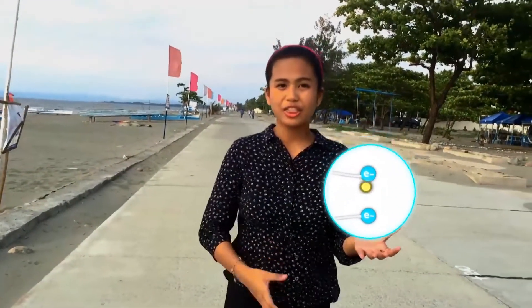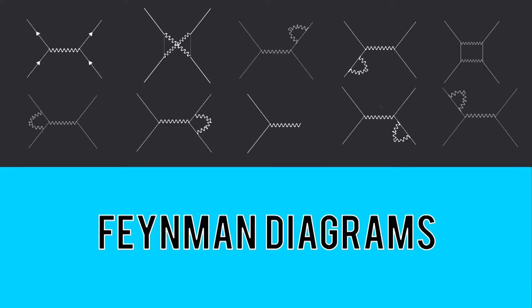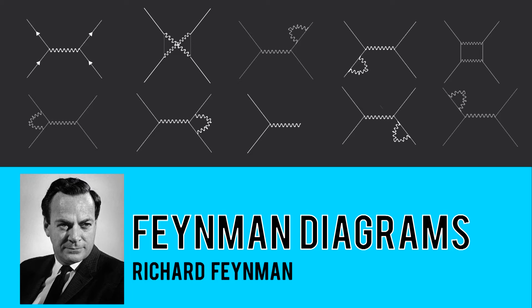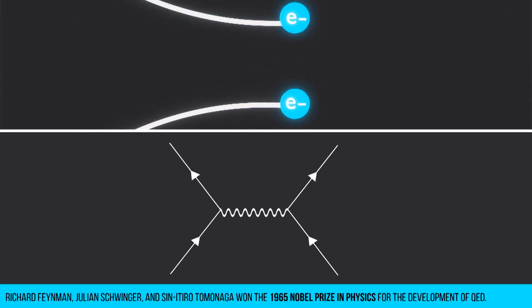And because an interaction can happen in infinite ways, it has infinite sets of equations, which is impossible to manage. But thanks to the Feynman diagrams created by Richard Feynman, these infinite possibilities were narrowed down to the most probable interactions.